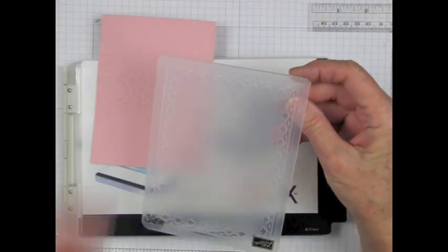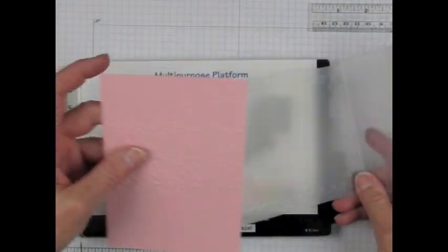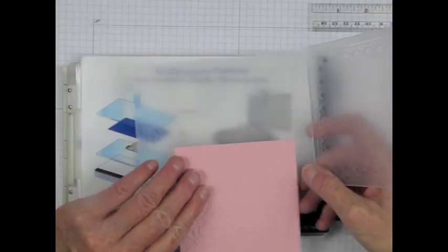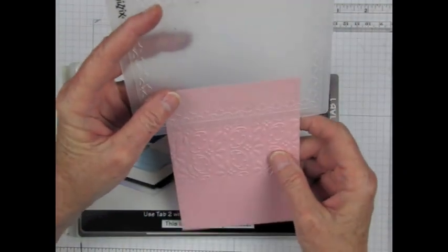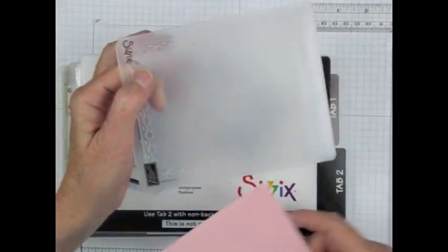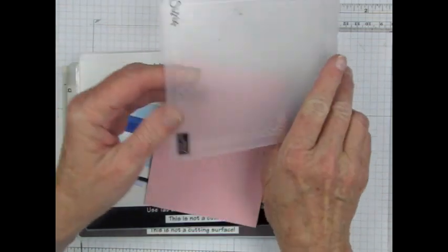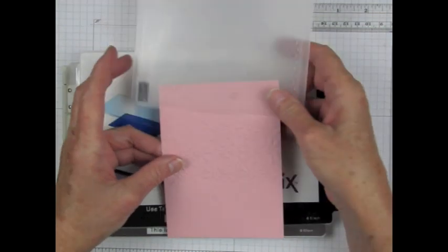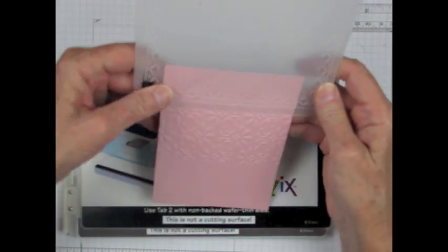Next I take the frame tulips embossing folder and I'm going to position my cardstock so that the tulips will emboss in a line right at the margin of the finial press design. First of all, I have to make sure that I'm getting the embossed side up, not the debossed side.